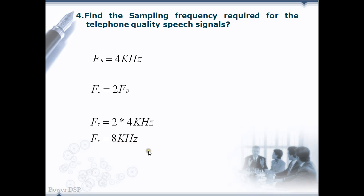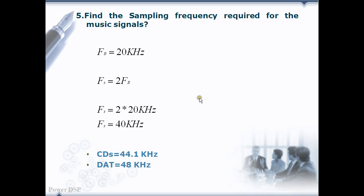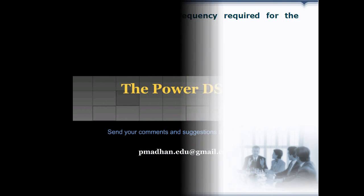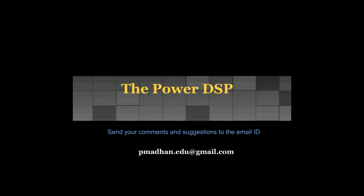Now we take an audio signal and find the sampling frequency required. The audio bandwidth is from 20 Hz to 20 kHz. f_s = 2 * f_b = 2 * 20 kHz = 40 kHz — this is the minimum sampling frequency required to sample the audio signal. However, standards have already been set: for CD, the standard is 44.1 kHz, accommodating a maximum of 22.05 kHz. For Digital Audio Tape (DAT), the standard is 48 kHz, accommodating a maximum of 24 kHz. Thank you very much.